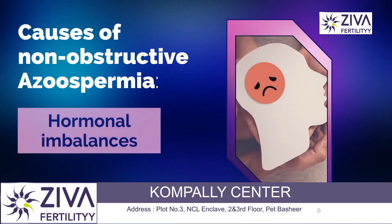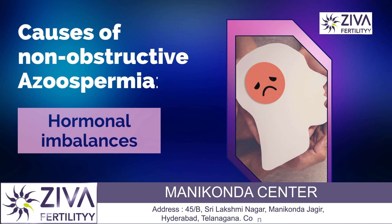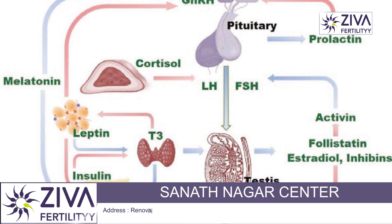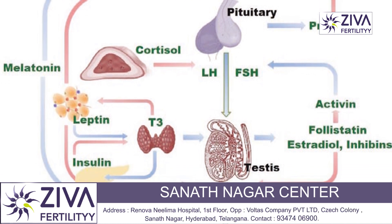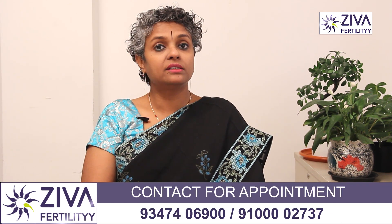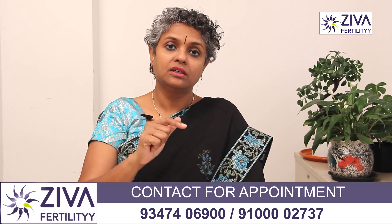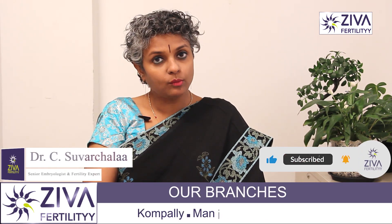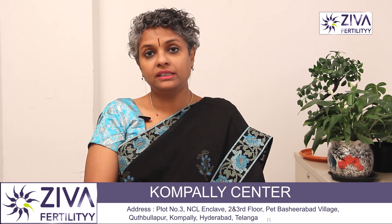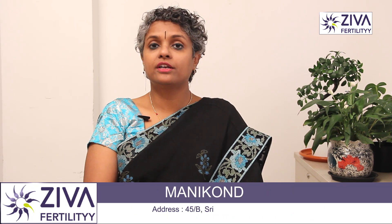Next we come to hormonal imbalances. When there is a hormonal imbalance in the hormones required for sperm production, this can also happen. The hypothalamus, pituitary, and gonadal axis is very critical. These three have to produce hormones normally whereby sperms are produced. Any imbalance in the hormones produced by these can lead to no generation of sperms.